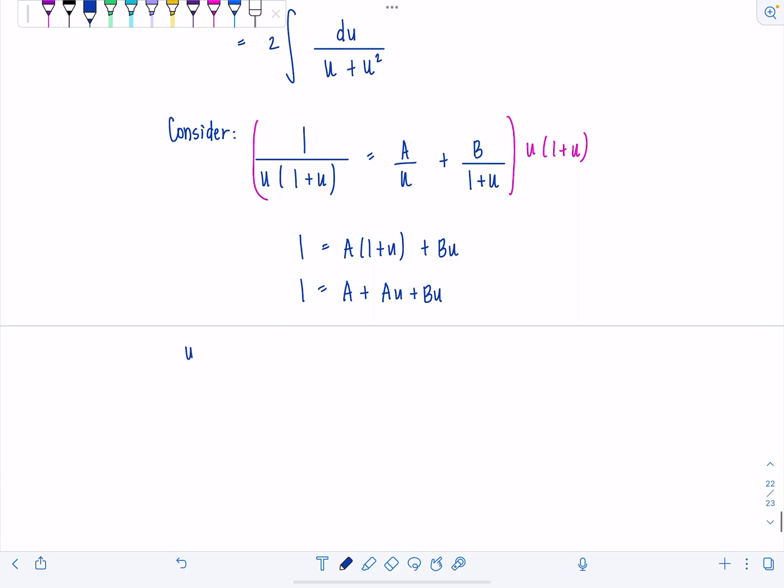Let's see here. The coefficients of u to the first on the left hand side, I don't have any. So that must equal a plus b. And then constants 1 has to equal a. So then that tells me b is negative 1.